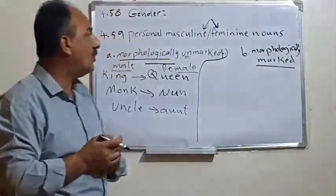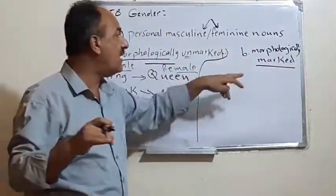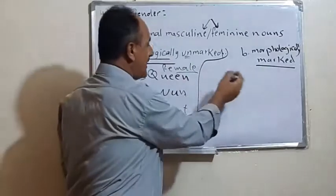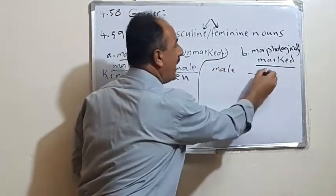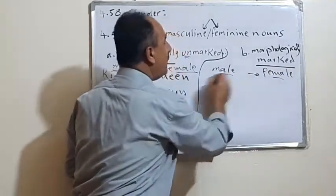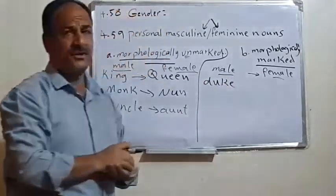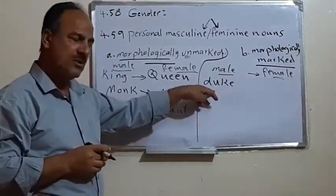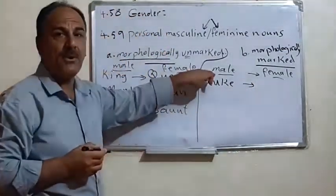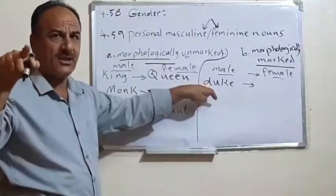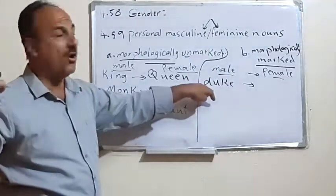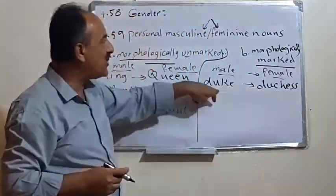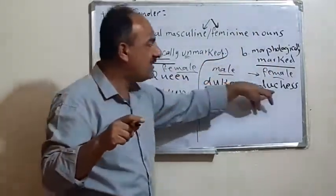The second group is called morphologically marked — meaning there is a mark or sign that indicates whether the noun is male or female, and there is a structural relationship between the two forms. For example, the word 'duke', a title given to princes in Europe, becomes 'duchess' in the feminine form. God becomes 'goddess'. In these cases, the feminine form is derived from the masculine.